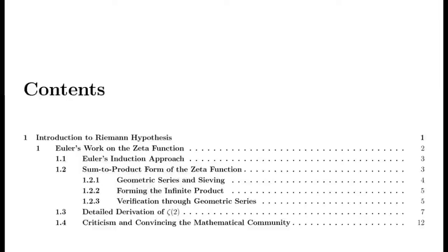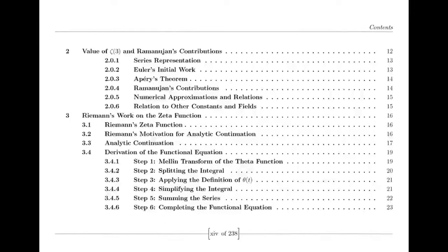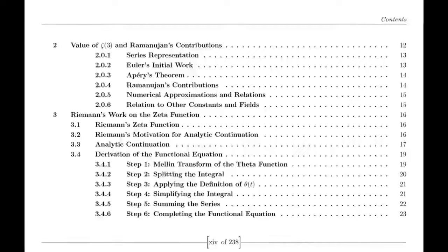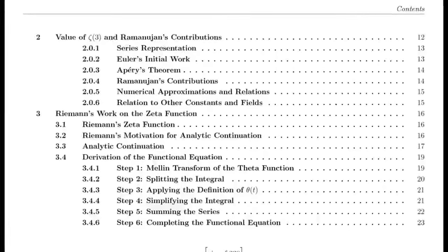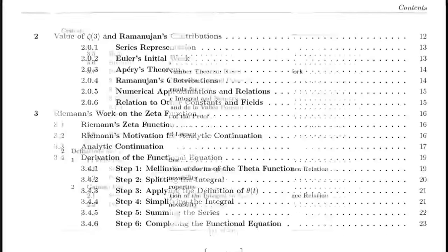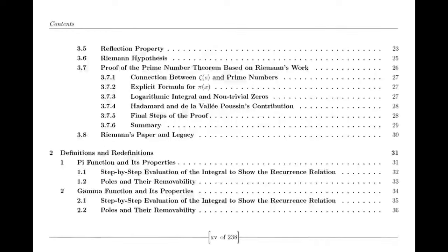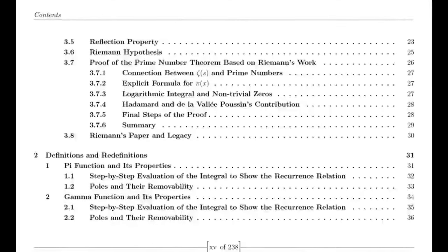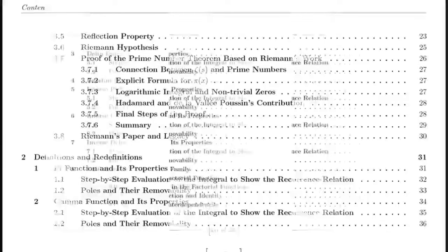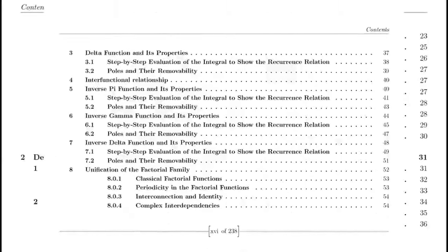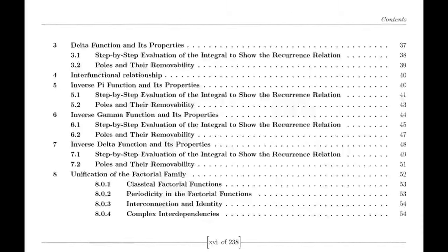In the 20th century, the zeta function continued to evolve. The emergence of analytic number theory brought with it new techniques for understanding the function's behavior. Mathematicians like Hadamard demonstrated the profound connection between the zeta function and the distribution of prime numbers, showcasing how this simple series could hold the key to one of mathematics' deepest mysteries.